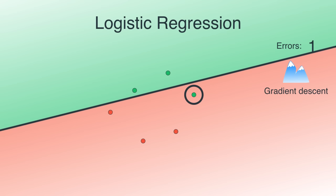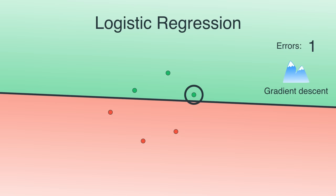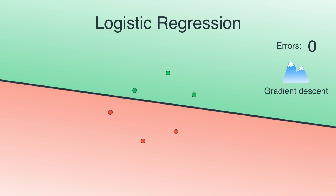Moving the line in one direction correctly classifies one point, bringing errors down to one. Moving it a little more brings errors to zero. In reality, since we use calculus for gradient descent, it turns out the number of errors is not what we minimize — instead we minimize something that captures the number of errors called the log loss function. The log loss function assigns a large value to misclassified points and a small value to correctly classified points.